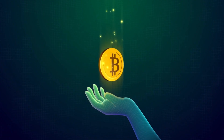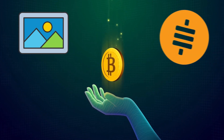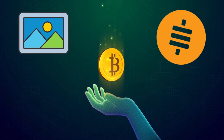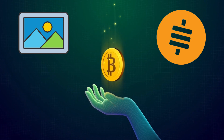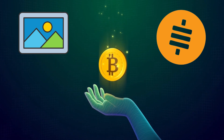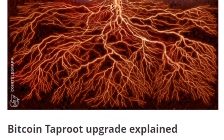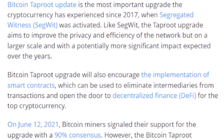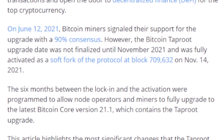Ordinals work by inscribing rich data, such as an image, onto a single satoshi. Each satoshi has a unique serial number based on when it was mined. This means any inscribed rich data can be transferred to someone by sending the specific satoshi that it is attached to.